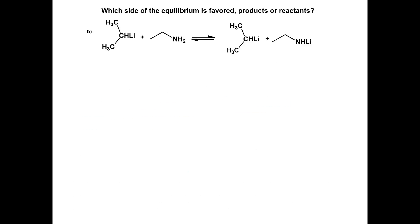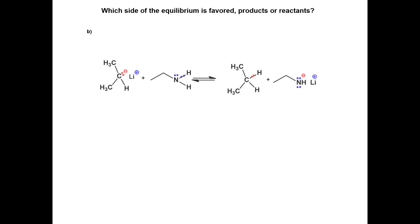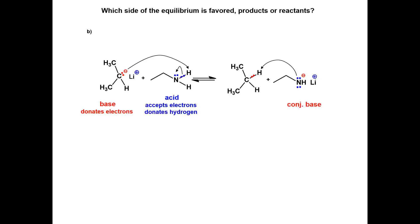Which side does the equilibrium favor? First, put lone pairs and charges on the atoms and identify the acids and bases on both sides of the reactions. The base has electrons to donate and the acid will accept the electrons. For the reverse reaction, identify the conjugate acid and the conjugate base. Draw an arrow to show the electron donation of the base to form the nitrogen-hydrogen sigma bond and the breaking of the hydrogen bond on the acid.